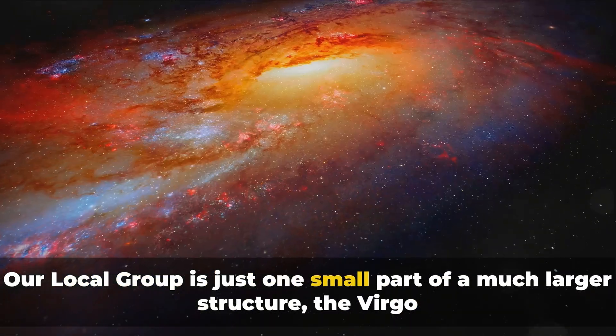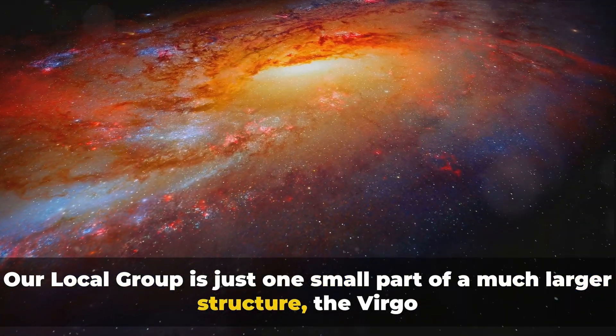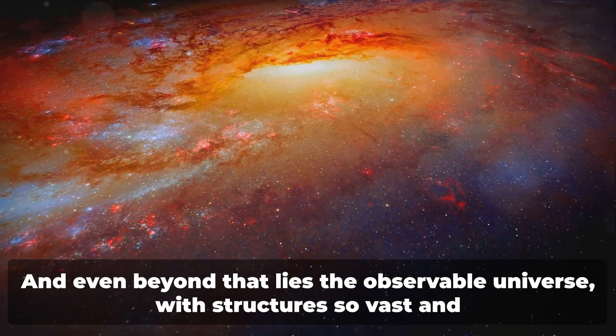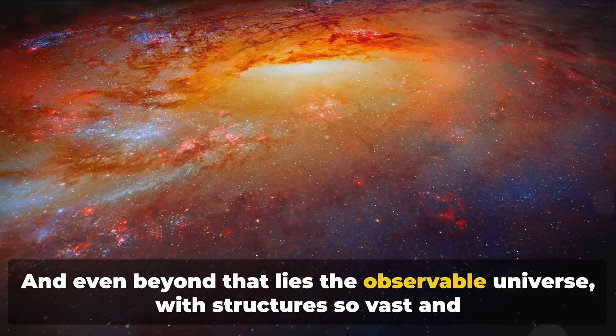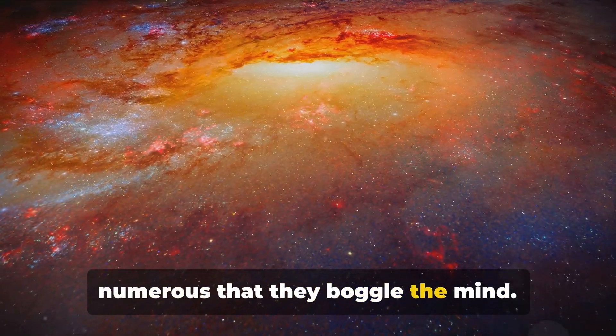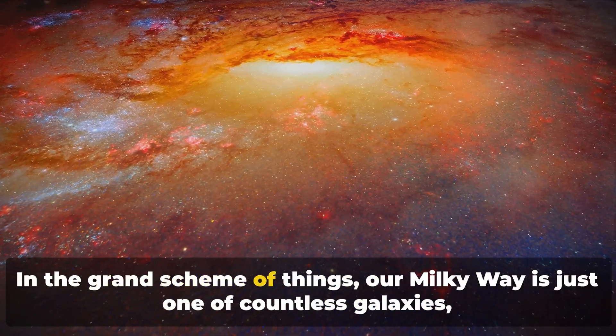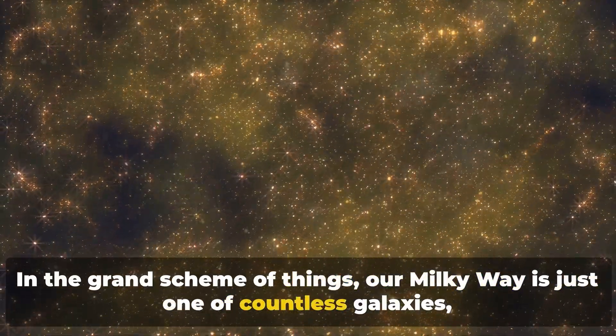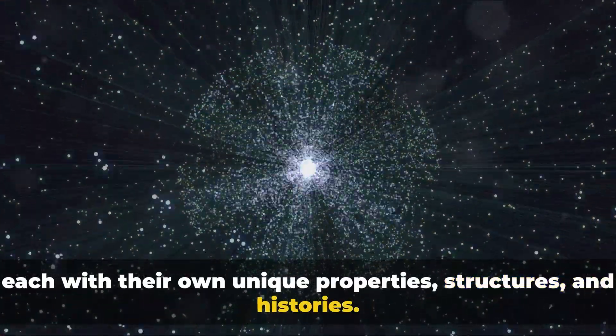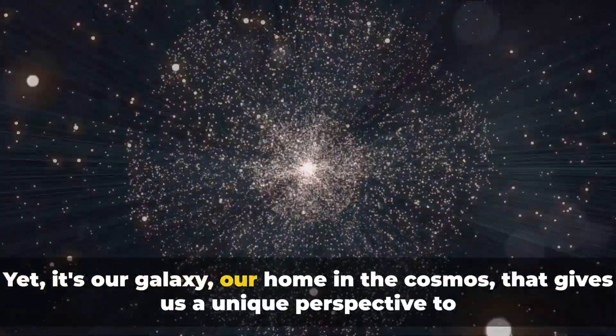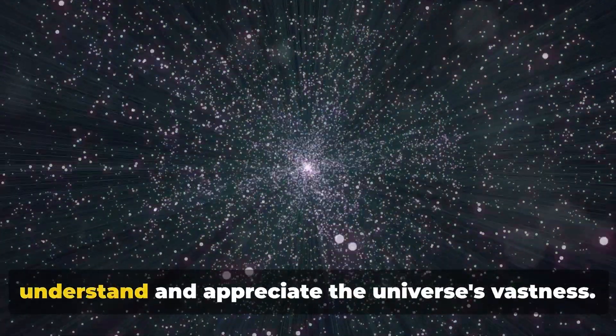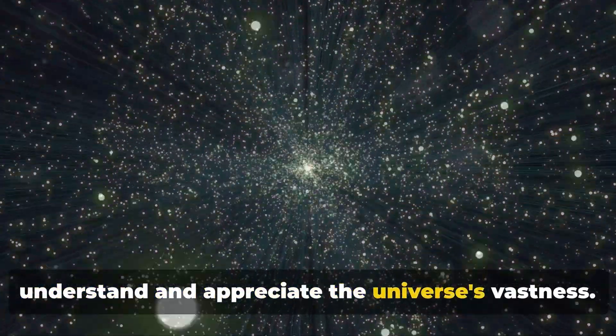Our Local Group is just one small part of a much larger structure, the Virgo Supercluster, which contains thousands of galaxies. And even beyond that lies the observable universe, with structures so vast and numerous that they boggle the mind. In the grand scheme of things, our Milky Way is just one of countless galaxies, each with their own unique properties, structures, and histories. Yet, it's our galaxy, our home in the cosmos, that gives us a unique perspective to understand and appreciate the universe's vastness.